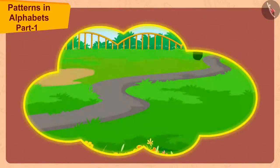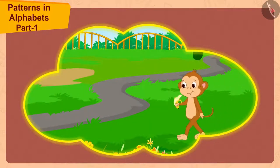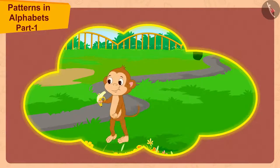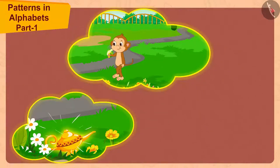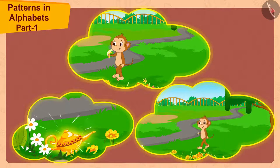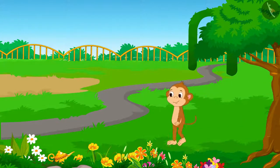Children, do you remember how Babban found a lamp while roaming in the park one day? From that day till today, Babban must have made at least one round of the park daily. Even today, he has come to the park in search of the lamp.